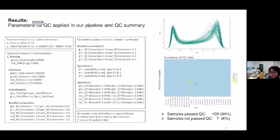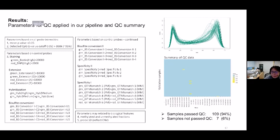The QC summary figure shows X-axis for QC parameters and Y-axis for samples tested. Values near 1 shown in blue indicate passed QC; yellow indicates non-passed QC. The majority of tested cases passed QC. Beta curves also show the typical pattern of beta value distribution with peaks near zero and near one. In total, 109 samples passed QC and seven failed.